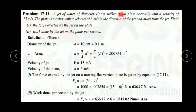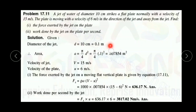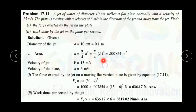Given data: diameter of the jet D = 10 cm. For solving the problem, we convert all units to SI units, so D = 0.1 m. From the diameter, we calculate the cross-sectional area of the jet: A = π/4 × D² = π/4 × (0.1)² = 0.007854 m².